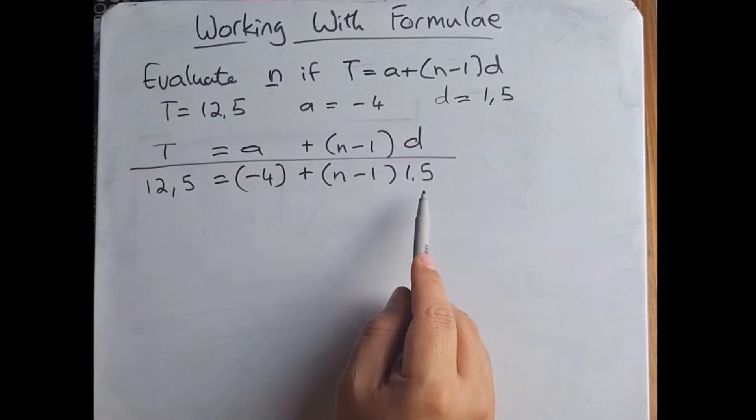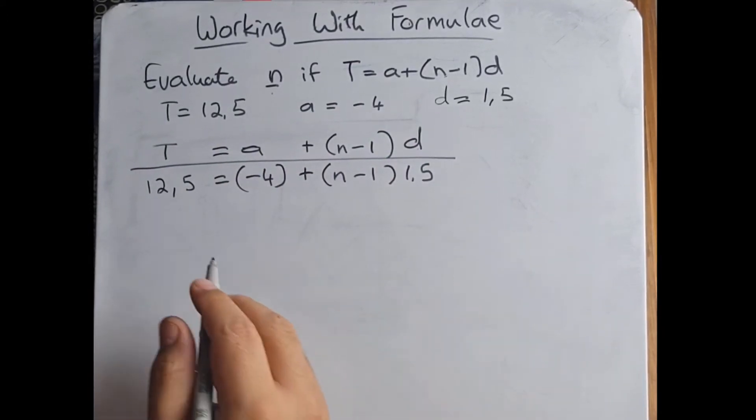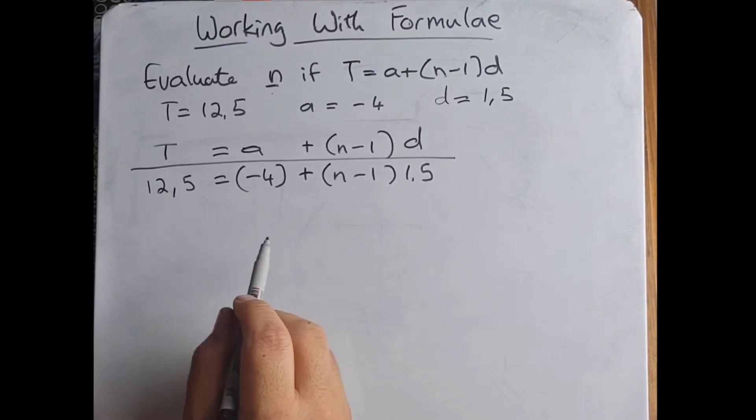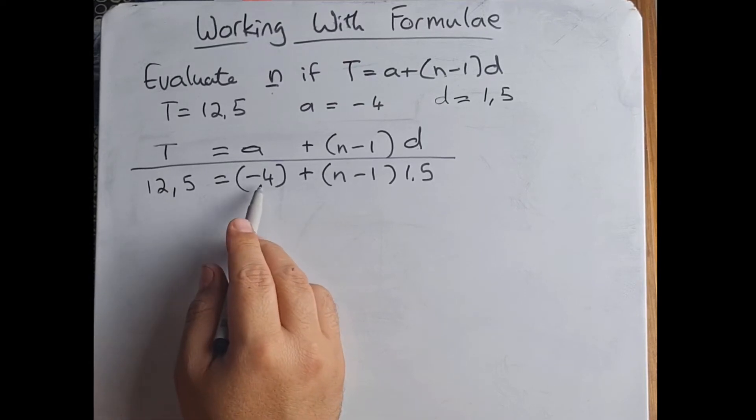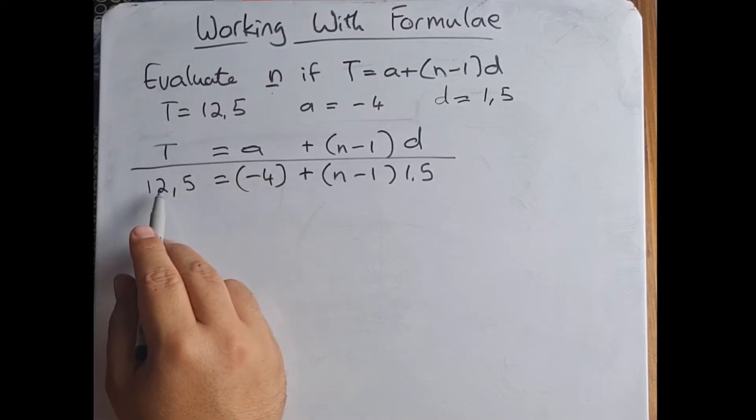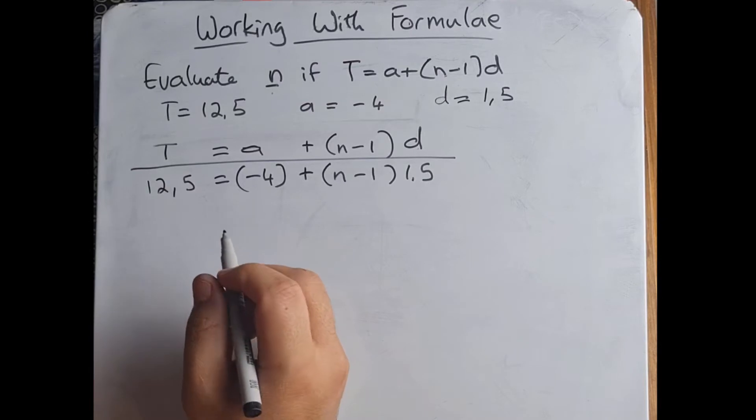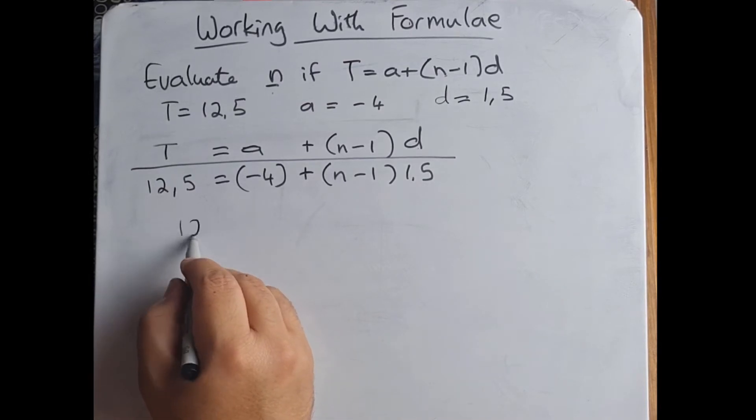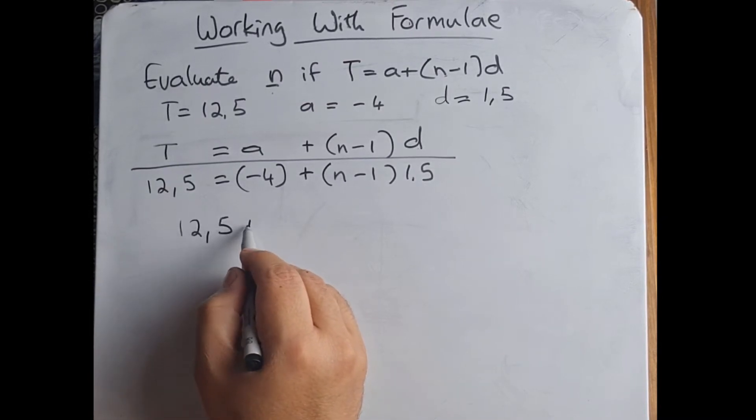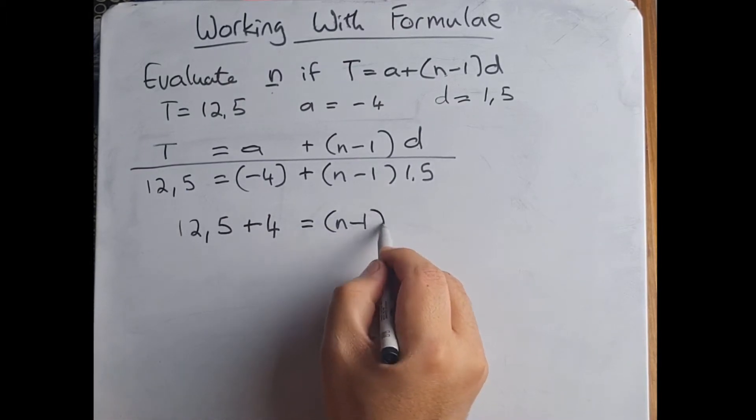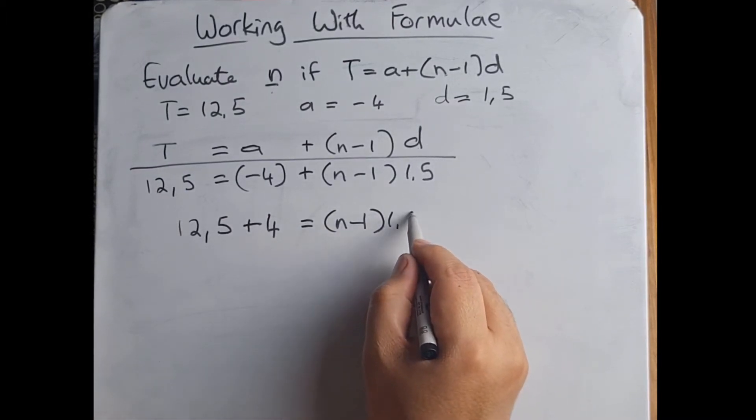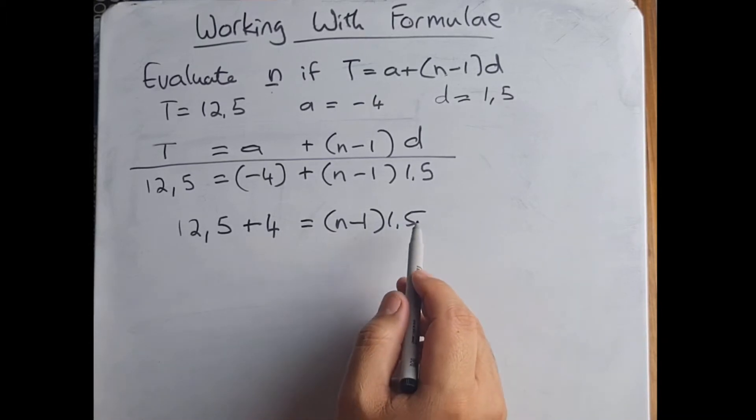So you can see the difference between the formula that they've given us and we've put in our substitutions. Now one of the things I can do is I can move certain things from the right over to the left, but then they have to change. For example, my -4 if I move that over it will become +4, so then it will read as 12.5 + 4 = (n-1)(1.5).